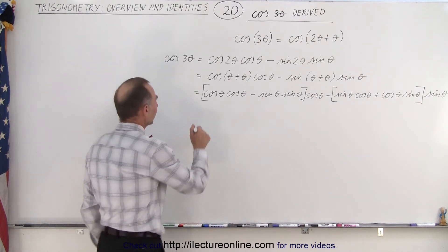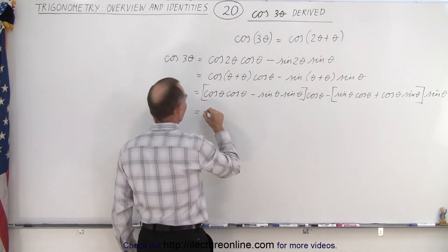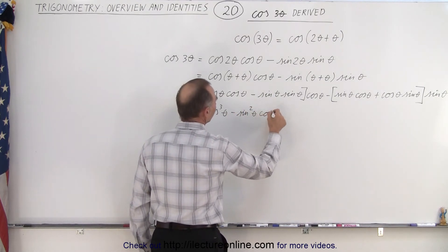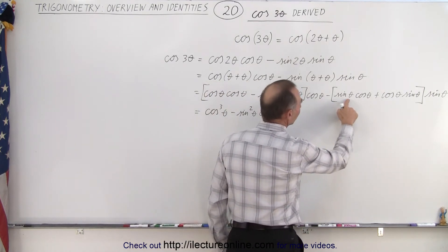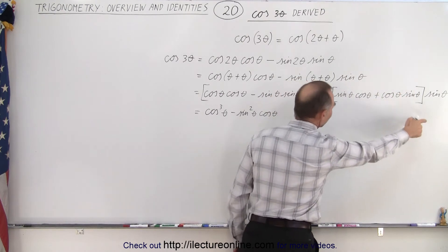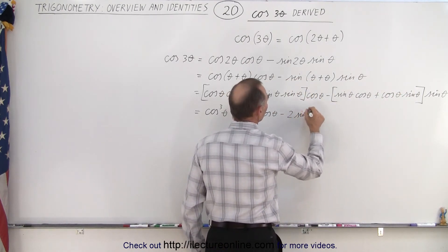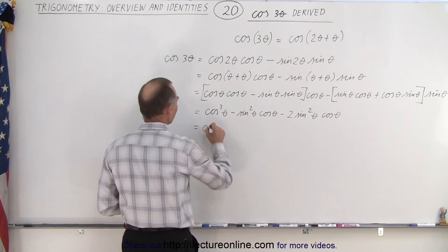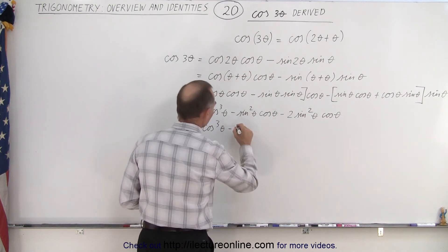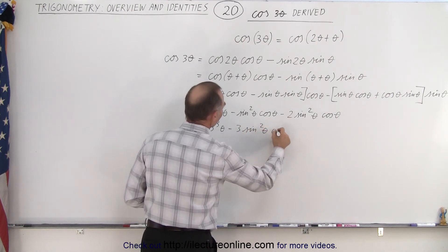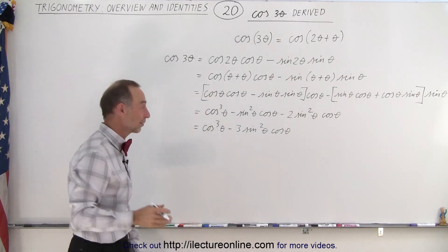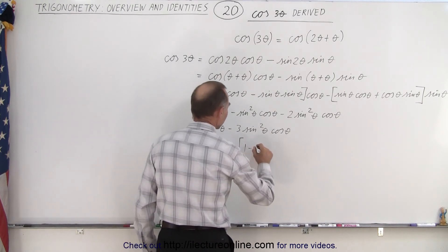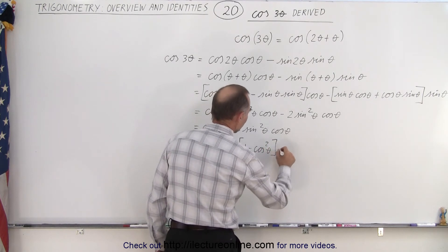Now we just have to simplify. This becomes cosine squared times cosine, giving cosine cubed theta, minus sine squared theta times cosine of theta. Then we have twice the sine of theta times the cosine of theta times sine of theta, which can be written as cosine cubed theta minus 3 times sine squared theta times cosine of theta. Now I can make the replacement, writing this as cosine cubed theta minus 3 times (1 minus cosine squared theta) times cosine of theta.